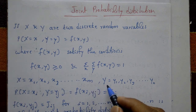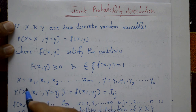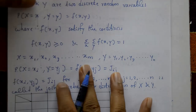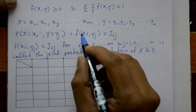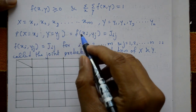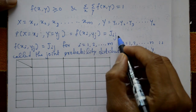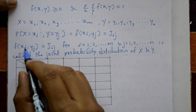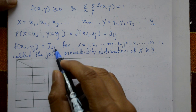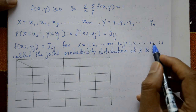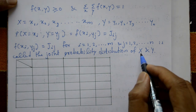Here, capital X takes values X1, X2, X3, ... XM, and capital Y takes values Y1, Y2, Y3, ... YN. P(X = Xi, Y = Yj) = F(Xi, Yj) is called J_ij, and F(Xi, Yj) = J_ij for i = 1 to M and j = 1 to N.